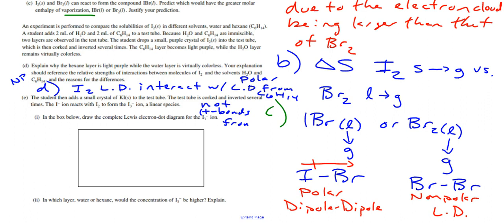You've got to spell it all out - don't get lazy. Say what IMF each thing has: hexane is nonpolar LDF, I2 is nonpolar LDF, water is highly polar with hydrogen bonding. Then say these don't interact, these do interact.